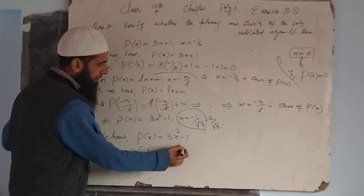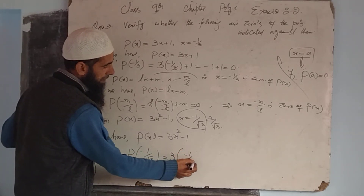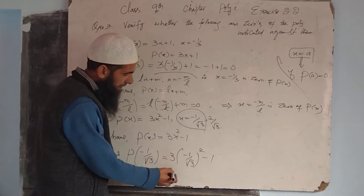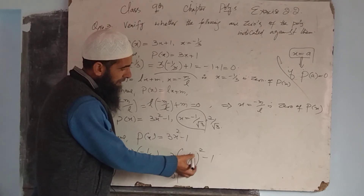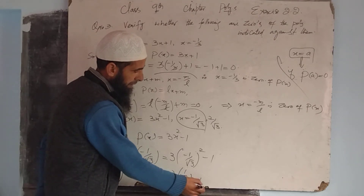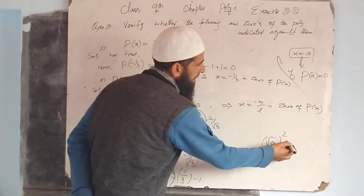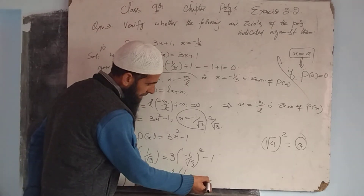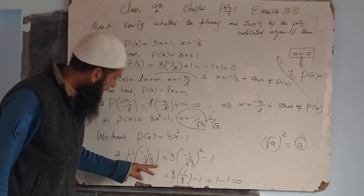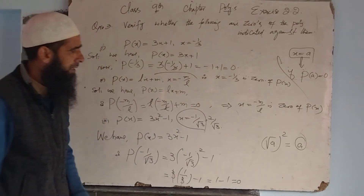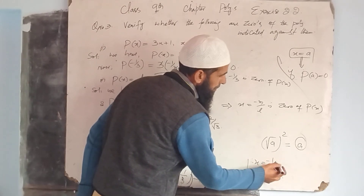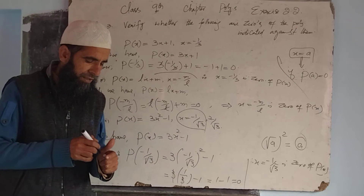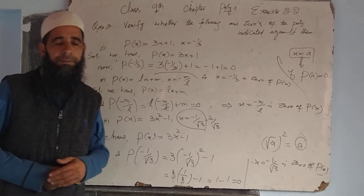P(-1/√3) = 3 × (-1/√3)² - 1. Squaring gives a positive value: 1² = 1 and (√3)² = 3, so this equals 3 × (1/3) - 1. Remember: (√a)² = a. The 3s cancel, giving 1 - 1 = 0. Therefore, x = -1/√3 is a zero of P(x). Thank you.